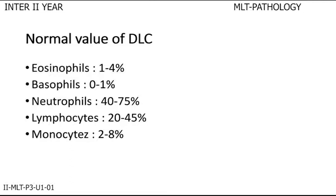Normal values of DLC: eosinophils 1-4%, basophils 0-1%, neutrophils 40-75%, lymphocytes 20-45%, monocytes 2-8%.